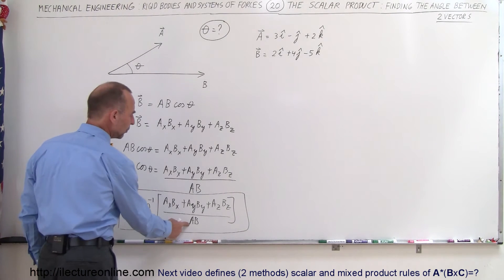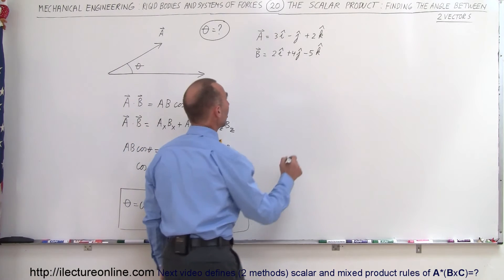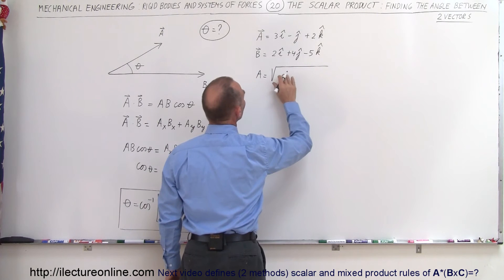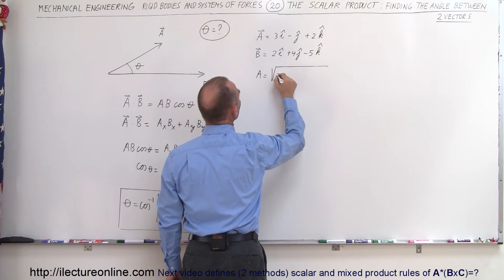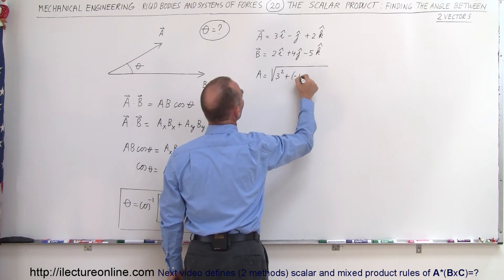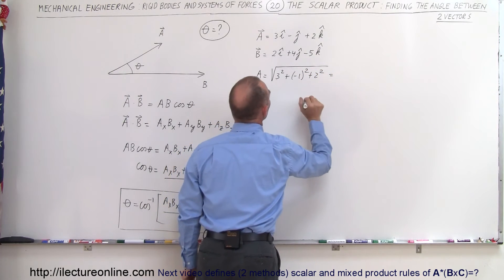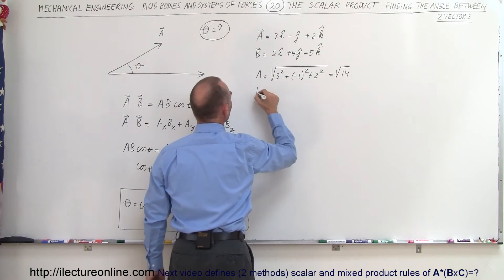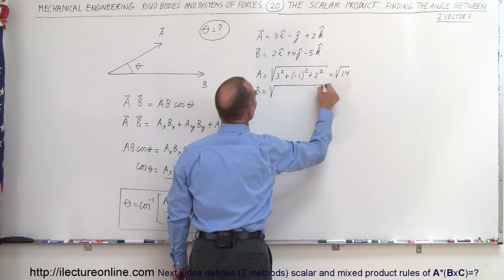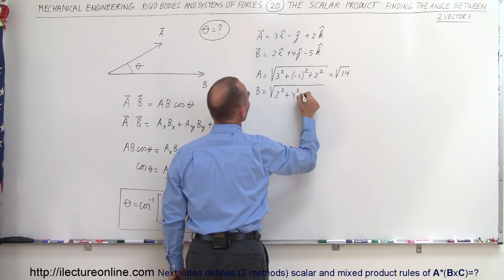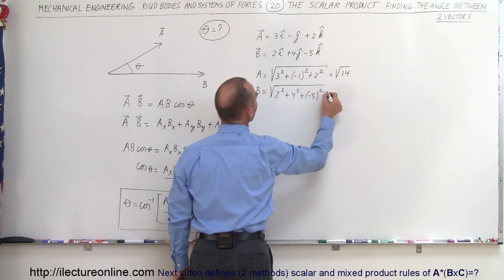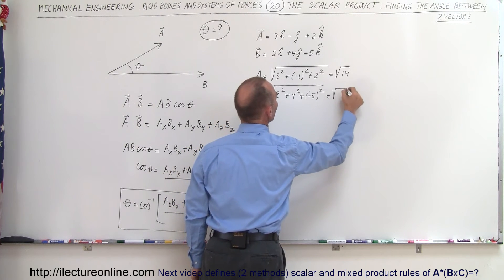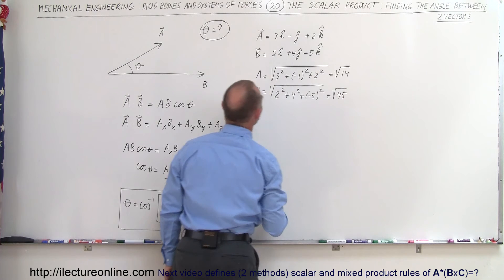Since we're going to need the magnitudes of A and B, let's calculate them. The magnitude of A is equal to the square root of the sum of the squares of the components: 3 squared plus negative 1 squared plus 2 squared, which equals the square root of 9 plus 1 plus 4, giving us the square root of 14. The magnitude of B is the square root of 2 squared plus 4 squared plus negative 5 squared, which gives us the square root of 4 plus 16 plus 25, equaling the square root of 45.